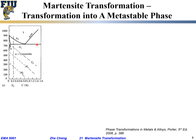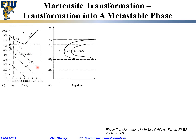Below this eutectoid temperature, under equilibrium conditions, we should have two phases: one is alpha and one is cementite. Then we have a series of lines — let's first look at the so-called T0 line.